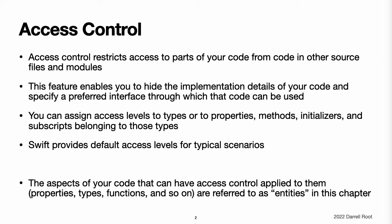as well as to properties, methods, initializers, and subscripts belonging to those types. Protocols can be restricted to a certain context, as can global constants, variables, and functions. In addition to offering various levels of access control, Swift reduces the need to specify explicit access control levels by providing default access levels for typical scenarios.